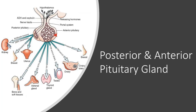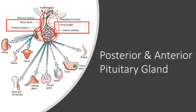The posterior pituitary gland has a direct nerve connection from the hypothalamus. The anterior pituitary gland, however, receives hormone signals from the hypothalamus — so we can see a direct nerve connection or a capillary bed.